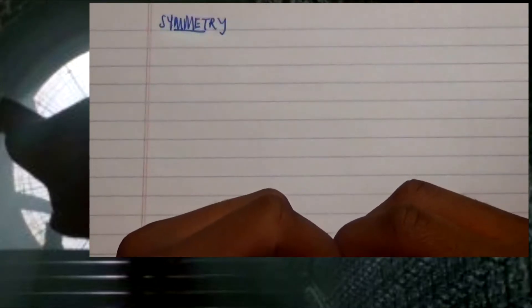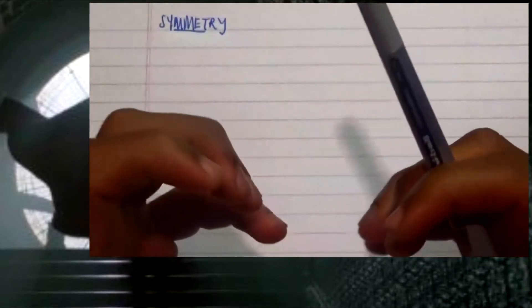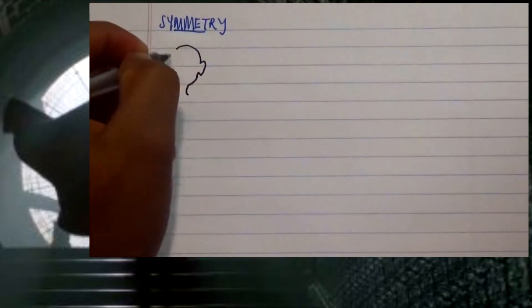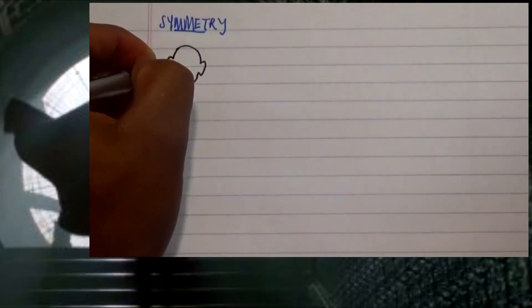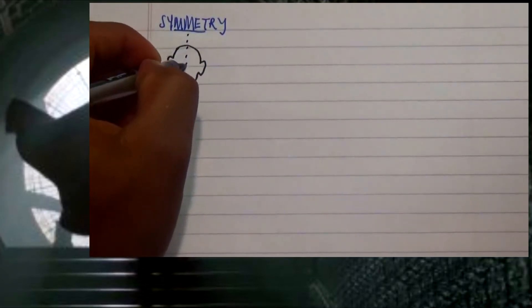Hello everyone again and welcome to my channel. We're going to be looking at symmetry and how symmetry is actually present in various organic and inorganic compounds. You will also notice that symmetry is familiar everywhere in natural or living organisms. Take for example human beings — this is my face, and my face actually has a line of symmetry.